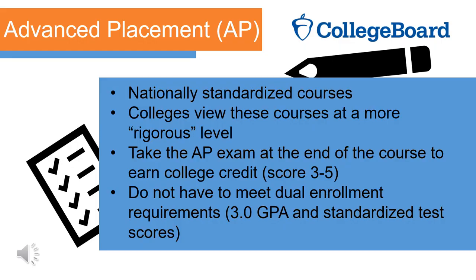Advanced Placement courses are nationally standardized and allow students to take a college-level course here on campus. The big difference between an AP course and an honors course is the level of rigor as well as the ability to earn college credit. Students earn high school credit in the class upon completion, and at the end of the year they take an AP exam to determine whether they earn college credit — typically awarded for a score of 3 to 5. You do not have to meet dual enrollment requirements, which is a 3.0 GPA and standardized test scores, to take AP classes. However, it is recommended that you are a level 3 or higher reader and have a strong work ethic.